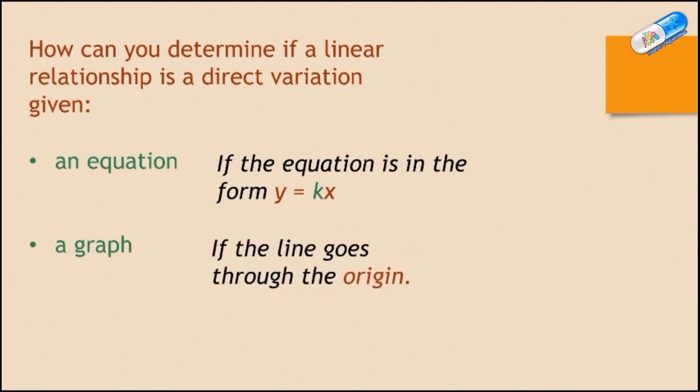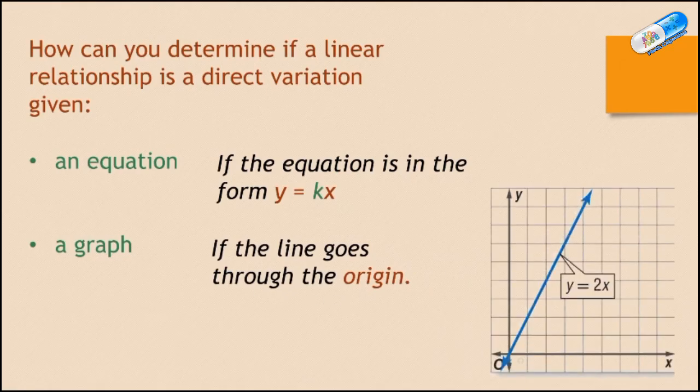Given a graph, the line goes through the origin. So if the line goes through the origin, like in this graph, y and x, the relationship between them, the graph goes through the origin here. This is the origin. So if it goes through the origin and it's a straight line, this means that the relation between y and x is a direct variation.